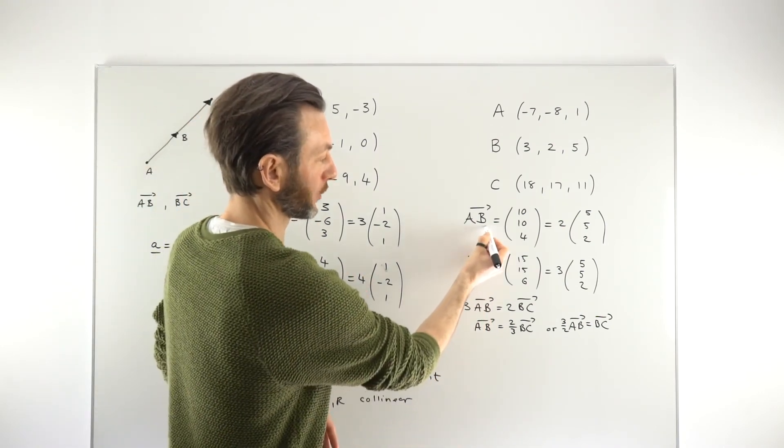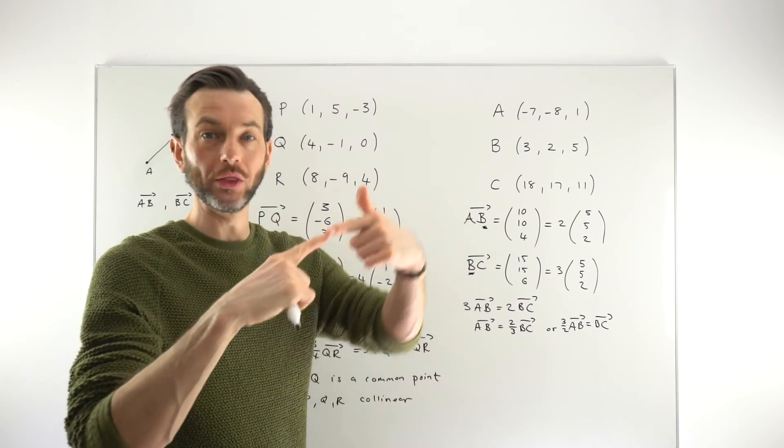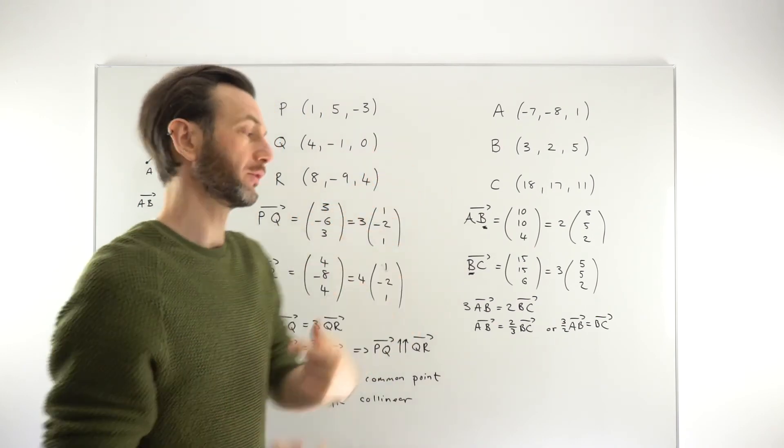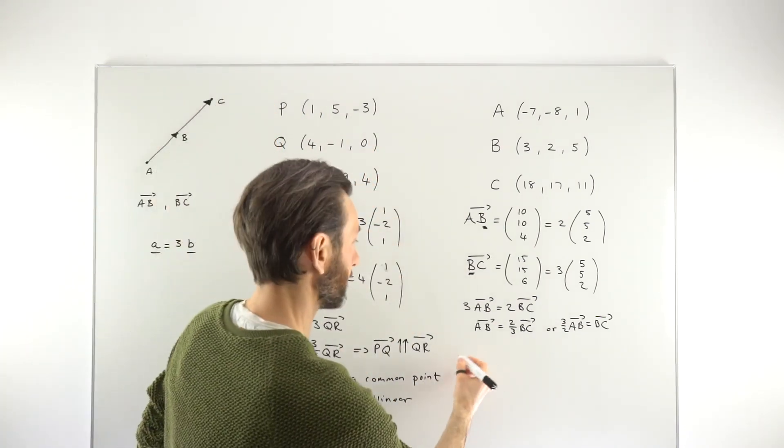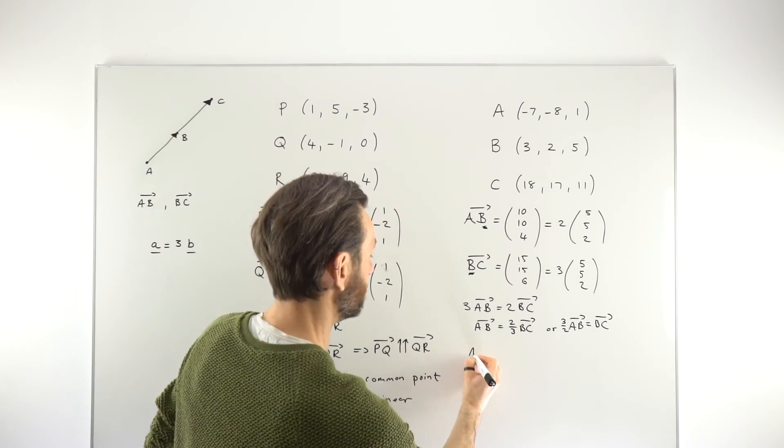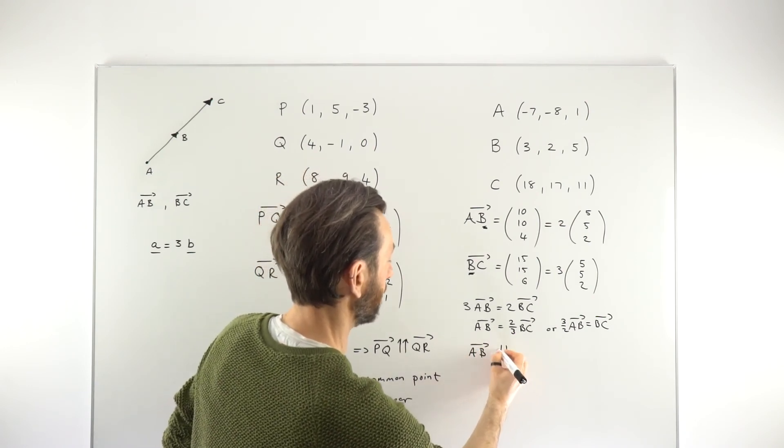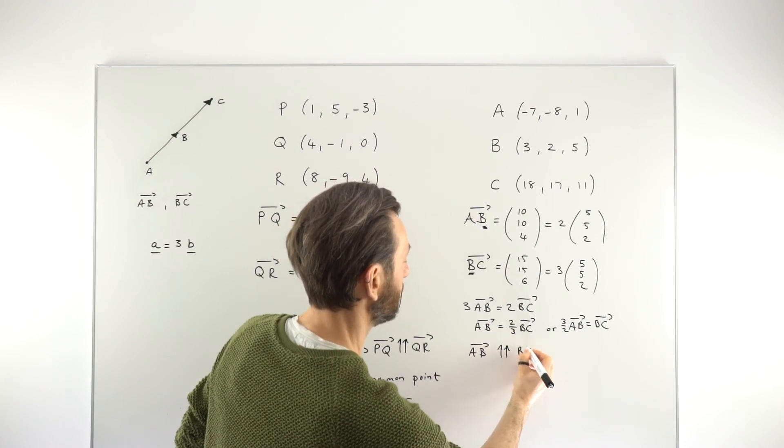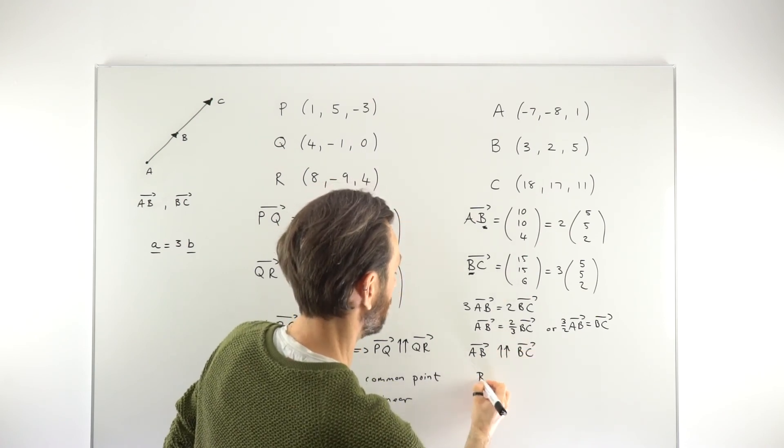So you would say something like, so AB is parallel to BC. B is a common point.